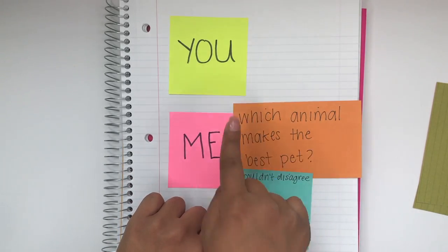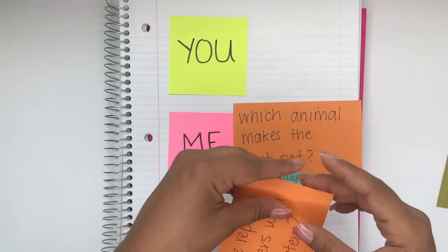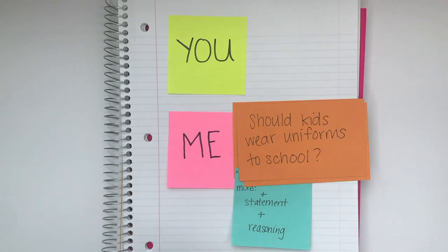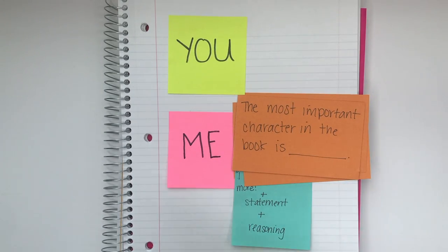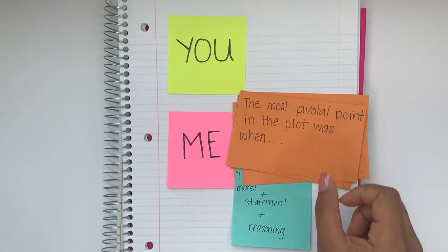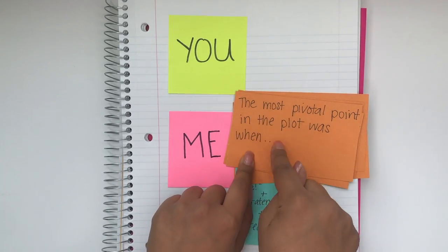Students go back and forth for a set amount of time — usually two to three minutes — and then they move on to the next debate topic and do it again. Once your students are comfortable debating some of the fun, lighthearted topics, you can create new ones or even create literature-based statements, like: the most important character in the book is..., a character in the book would make a good friend, or the most pivotal point in the plot was when...